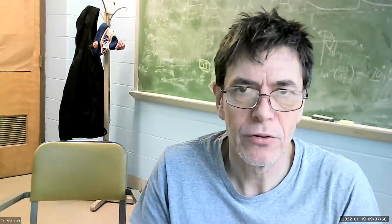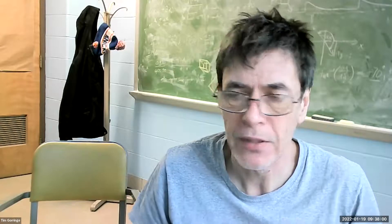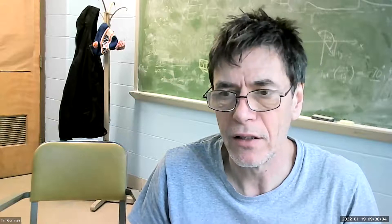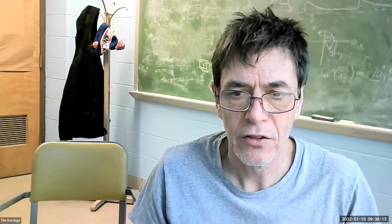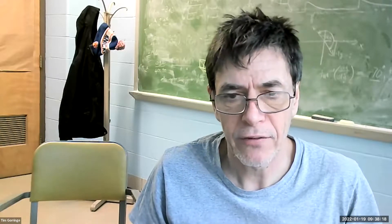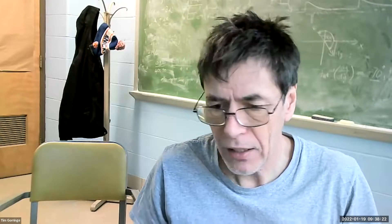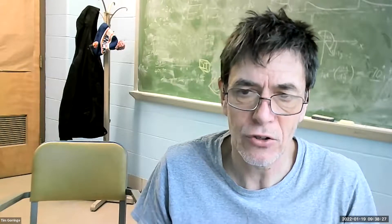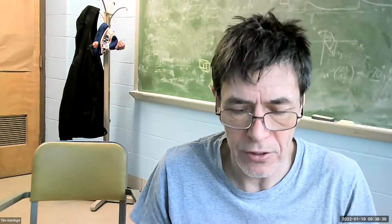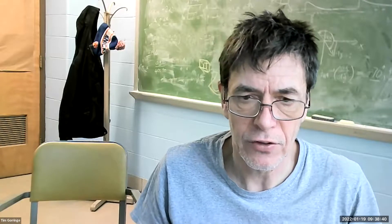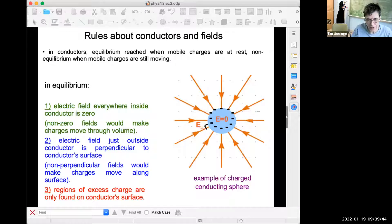I wanted to take a moment to discuss the case of conductors, something we talked about in the first lecture and in lecture three. There are some special remarks when you have conductors in electrical fields. In particular, I want to say something about the electrical field inside the conductor and on the surface of the conductor, and about the charge distribution inside and on the surface of the conductor. This is the slide I never got to at the end of the third lecture — it's all about conductors in electrical fields.